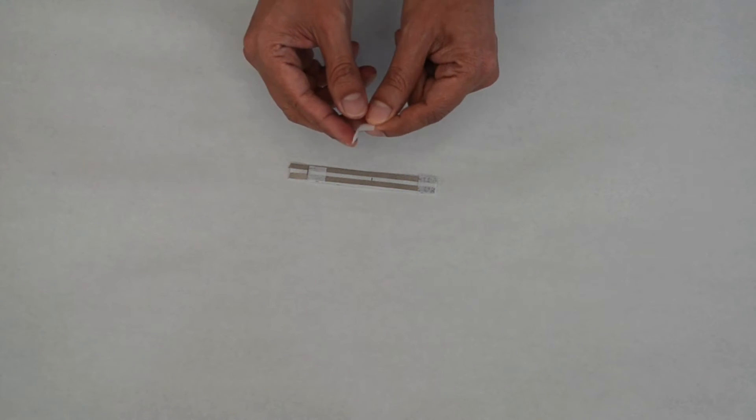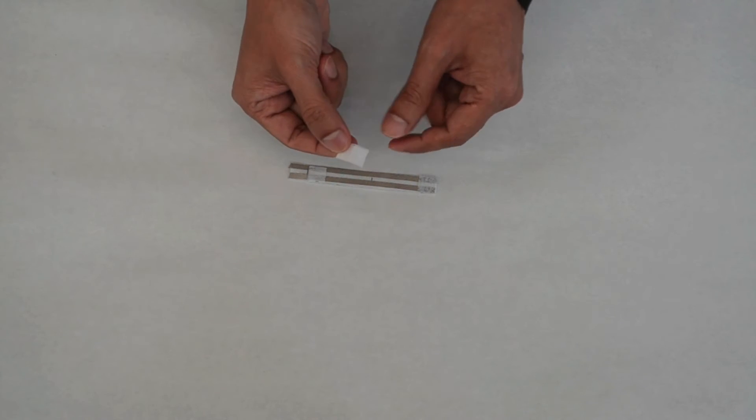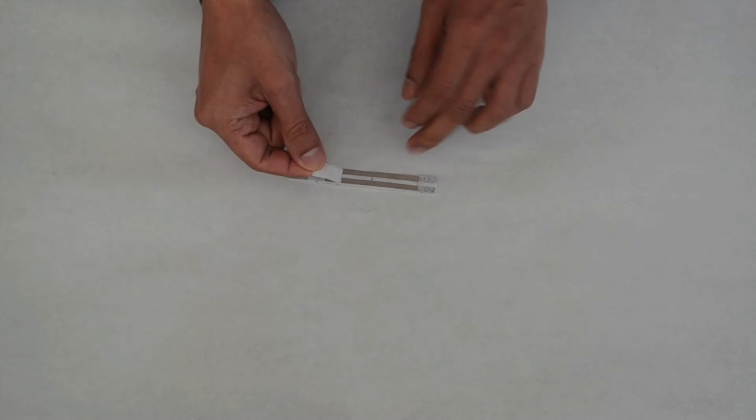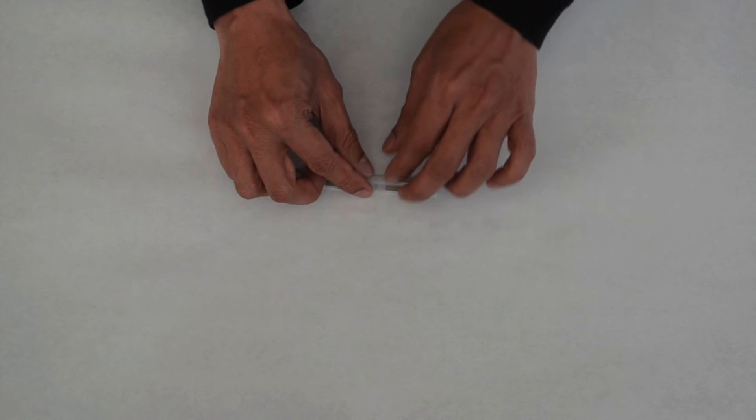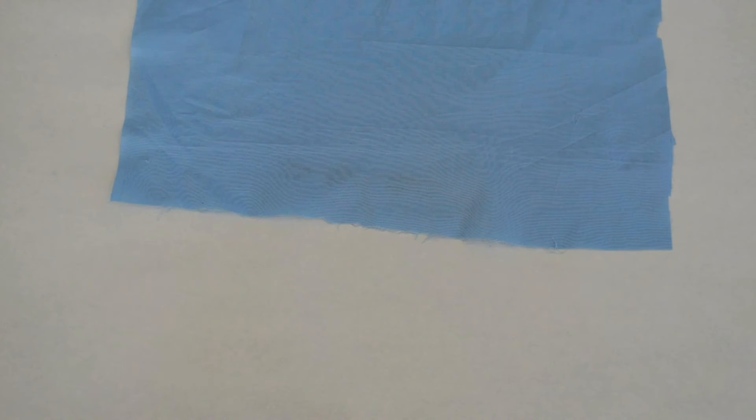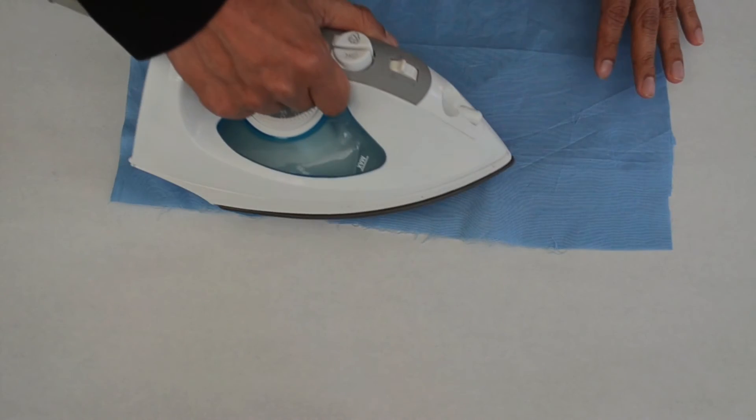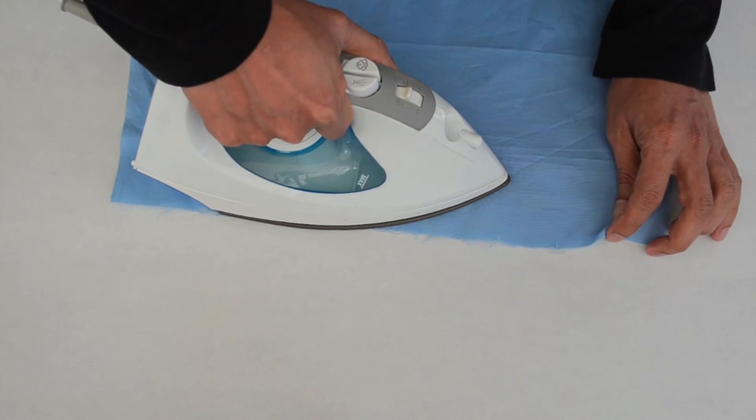Now take the three fourths inch piece of fusible fabric that we cut earlier and fold it in half to create a crease that will mark the piece's center. Now unfold the piece and use the crease created by the folding to line up the center of the piece with the mark created in the previous step. Cover the base and the fabric pieces with a cloth and iron it for a few seconds. Make sure that the fabric is attached to the base.